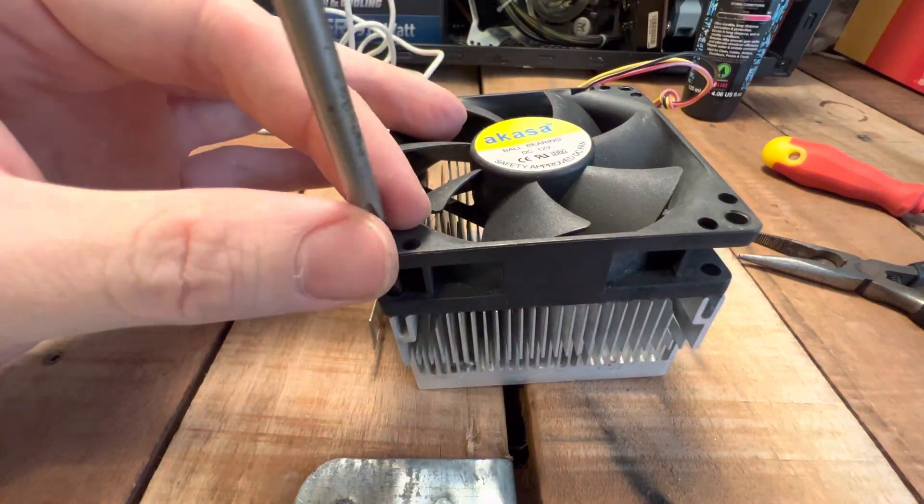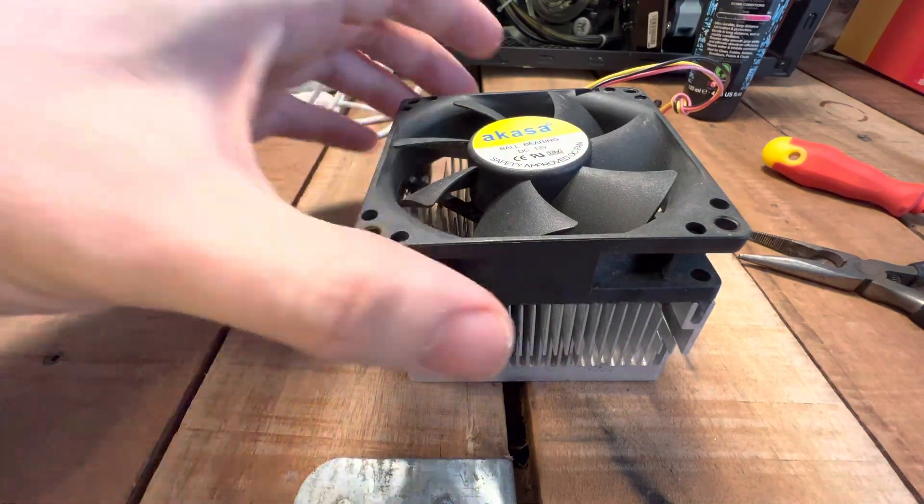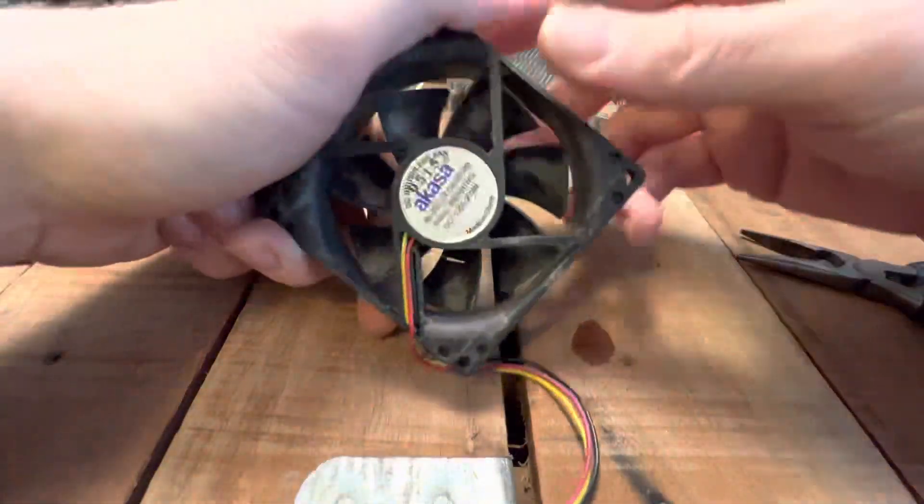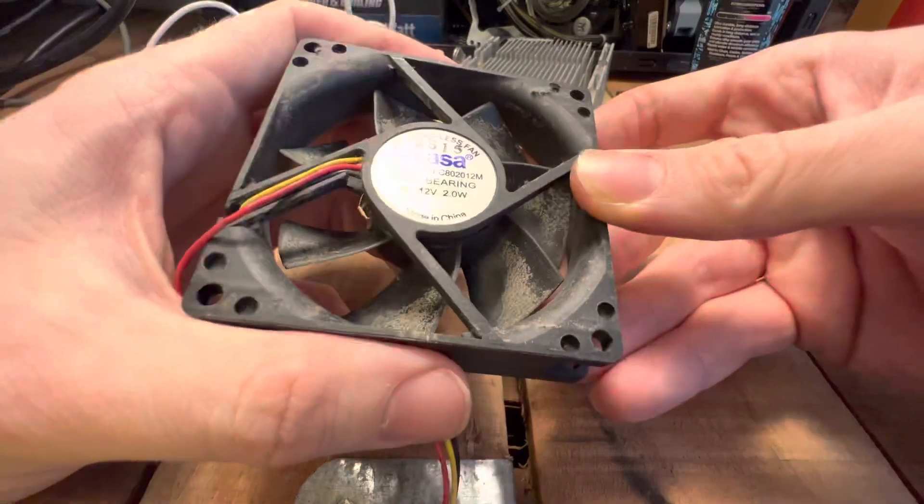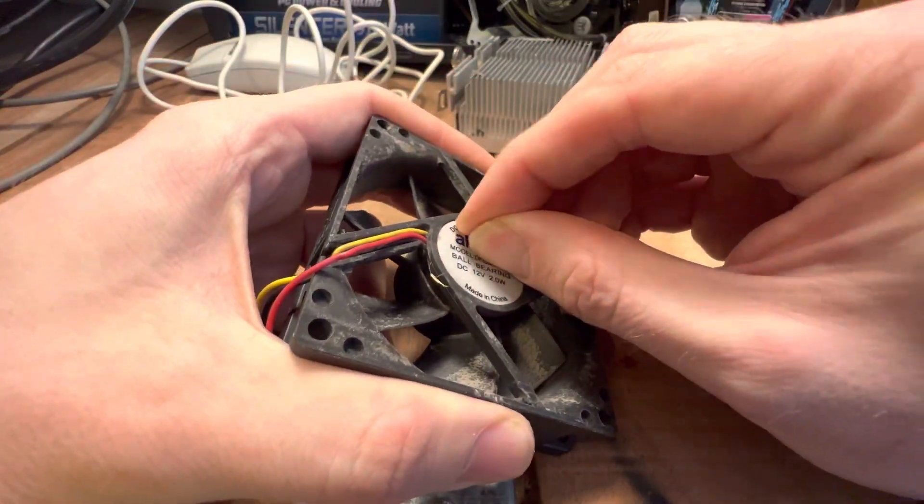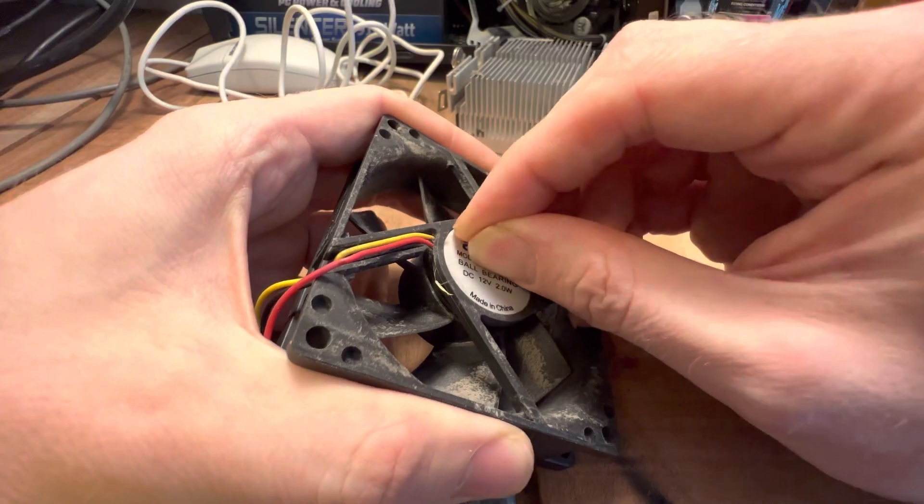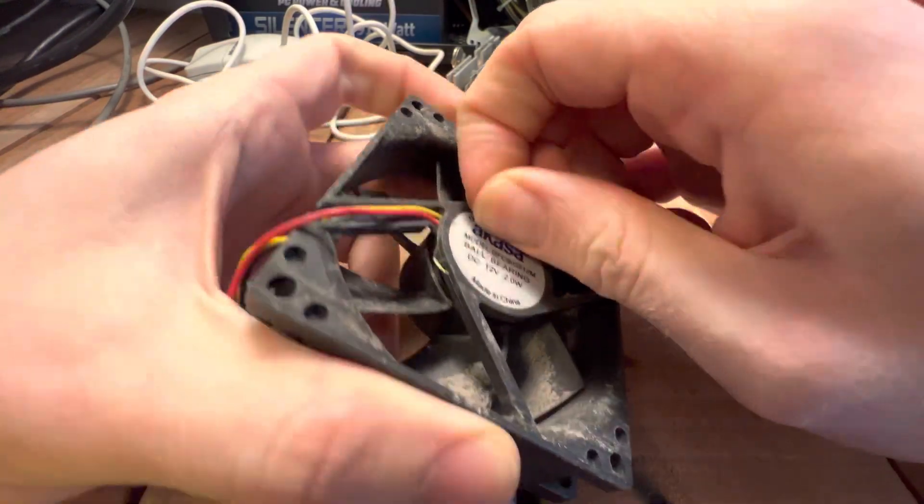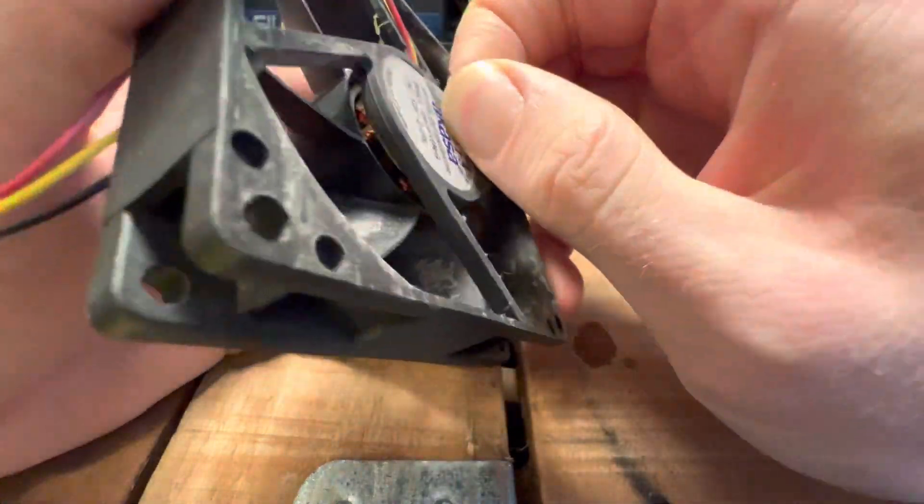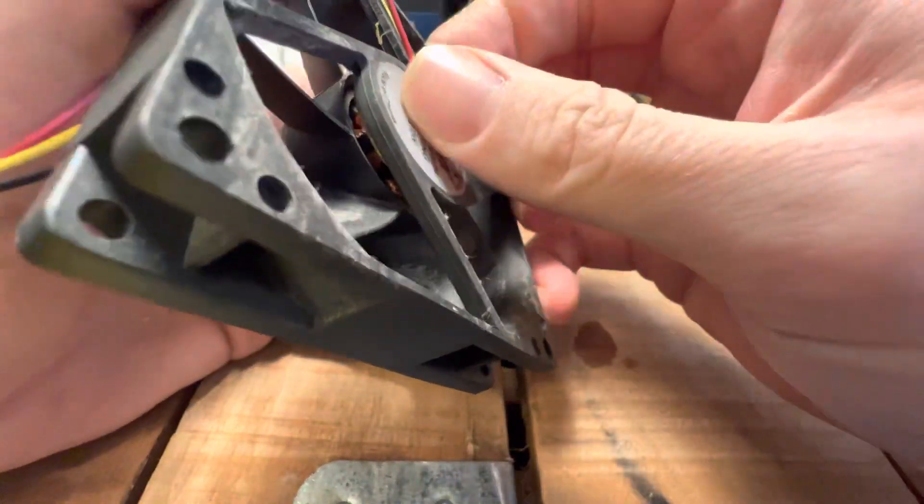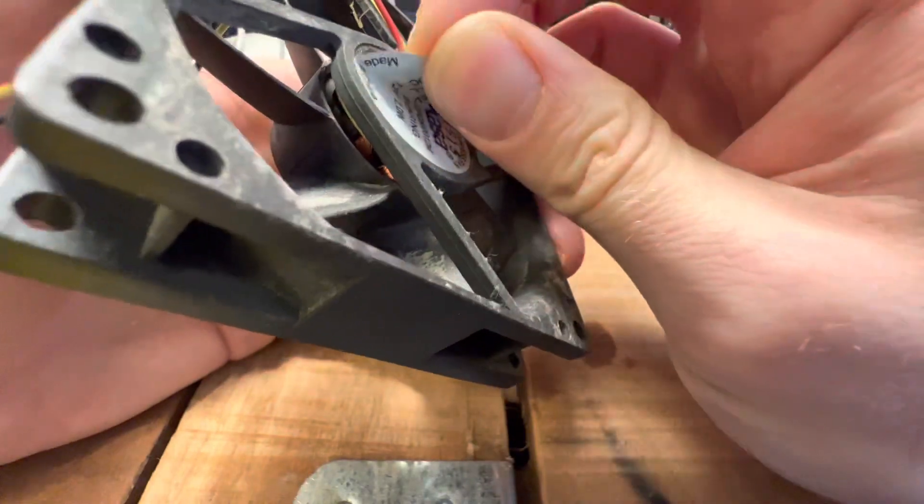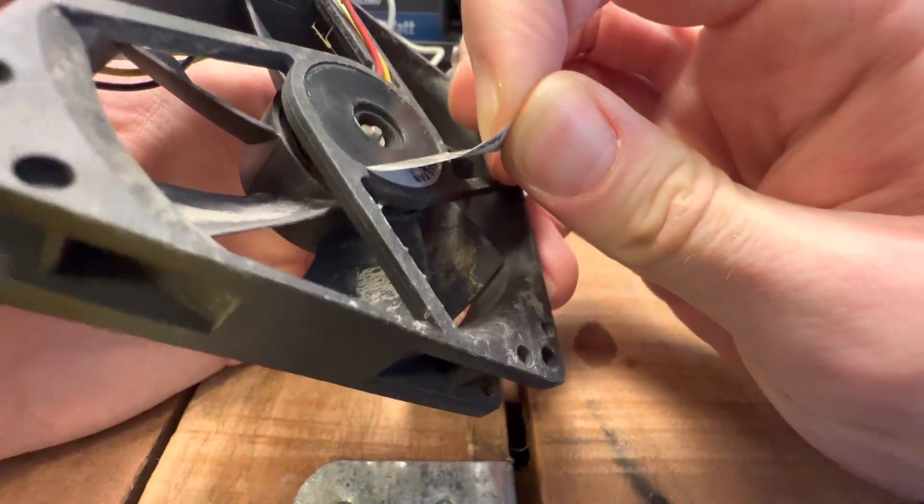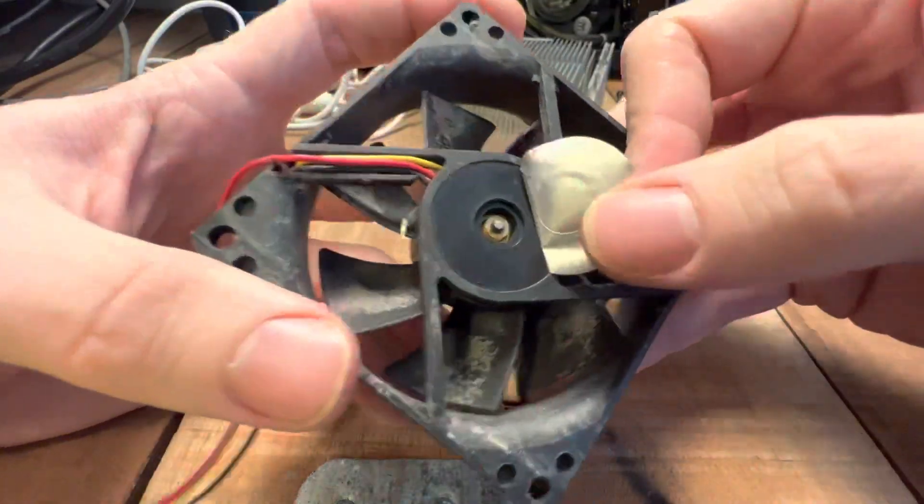This one's minging. But yeah, if we try and peel this one back, you can see in there we've got the little plastic retaining clip washer thing.